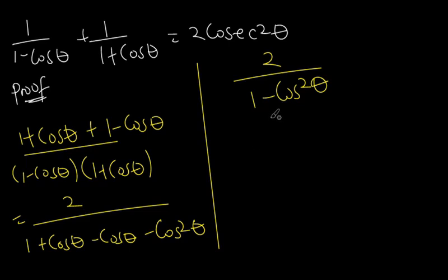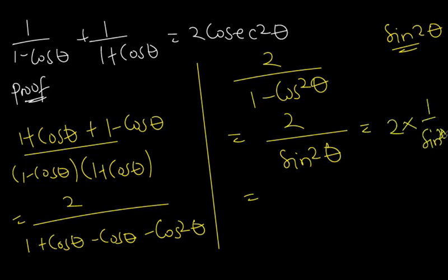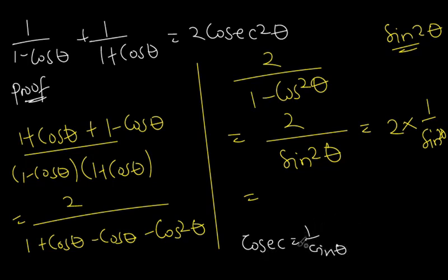Remember from identity one: cos squared theta plus sin squared theta equals one, so we can make sin squared theta the subject, giving one minus cos squared theta equals sin squared theta. In this expression, one minus cos squared theta is equal to sin squared theta, so we substitute that in place of one minus cos squared theta, giving us two over sin squared theta.